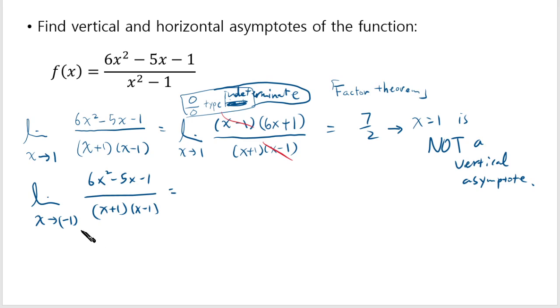On the other hand if you plug in negative 1 on the top you get 6 plus 5 minus 1. So that's 10 on the top. So this thing you're going to see 10 over 0. That's not an indeterminate. This means that the limit will go to either positive infinity or negative infinity. So the limit does not exist.